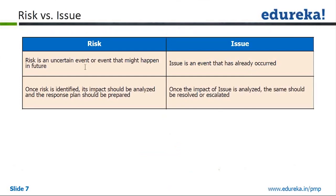Here is the difference: a risk is an uncertain event or condition that might happen in the future. An issue is an event that has already occurred. Once a risk is identified, its impact should be analyzed and a response plan should be prepared. Once the impact of an issue is analyzed, it should be resolved or escalated — there is no response plan for it. We are not loosely saying 'mitigate' here; we are saying 'response plan,' and there is a reason for that distinction.